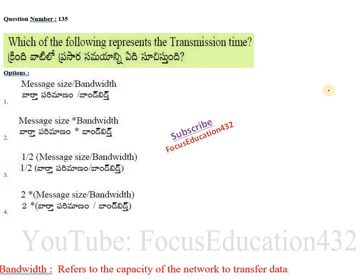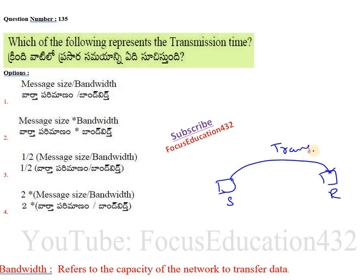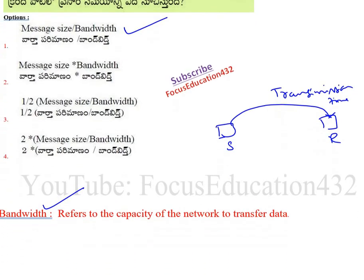Next question: which of the following represents the transmission time? Transmission time is how much time it takes to transfer the data from the sender to the receiver. The correct answer is: size of the message divided by bandwidth. Bandwidth refers to the capacity of the network to transfer data — like the speed. So transmission time equals message size divided by bandwidth.